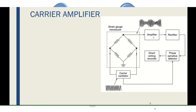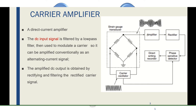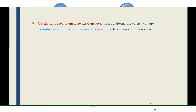After modulation, the signal is amplified using an amplifier. This AC signal is then converted into DC by using a rectifier amplifier. The DC signal then goes to a phase-sensitive detector, which performs demodulation — since amplitude modulation is used, amplitude demodulation is applied here. After demodulation, the signal is recorded using a direct writing recorder. This is why the carrier amplifier is also called a direct current amplifier.